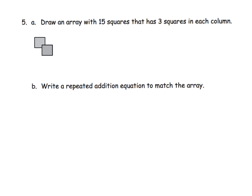The directions say 'draw an array with 15 squares that has three squares in each column.' Think of all the vocabulary going on here. From a universal design for learning or English language learner's point of view, there is just tons of vocabulary. Parents and teachers, please create a word wall with pictures so students can look up what an array is, what a square is, what a column is whenever they need a reminder.